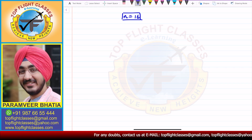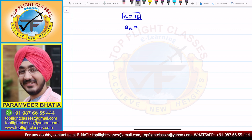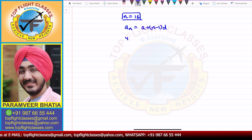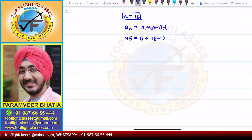Now we have to find d. The nth term formula is: an is equal to a plus (n minus 1) times d. So here we have an as 45, a as 5, and n as 16, minus 1 times d that is to be found.